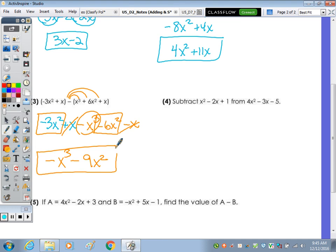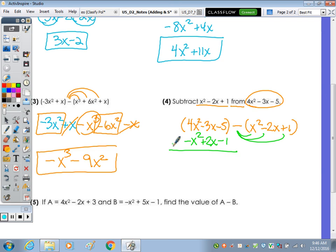Subtract x squared minus 2x plus 1 from 4x squared minus 3x minus 5. Whatever comes after the word from. So that trinomial, 4x squared minus 3x minus 5, is written first. Subtract this from this. So 4x squared minus 3x minus 5. Subtract x squared minus 2x plus 1. So as I distribute, I'm going to stack. So this becomes a negative x squared plus 2x minus 1.